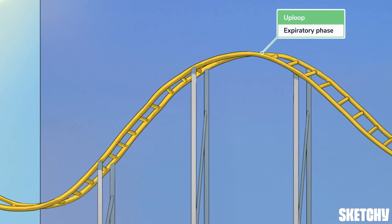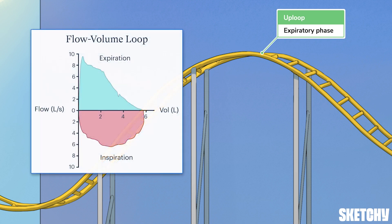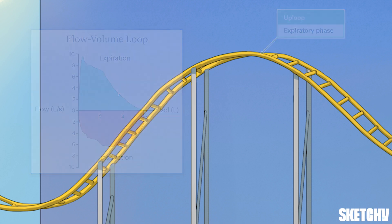What goes down must come up, so we end the cycle with the expiratory phase. Expiration, represented by the up-looping portion of the ride, is the process of expelling air out of the lungs. This up-loop on the ride will help you remember that on a flow-volume loop, the expiratory phase is represented by the up-going curve.